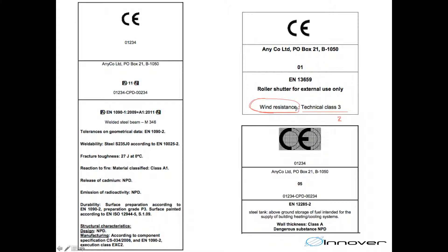The same thing goes for every other product and every other CE mark. For example, if reaction to fire is one of the characteristics declared in the CE marking, we can be sure that how the manufacturer defined reaction to fire is similar to every other manufacturer who has CE marked their structural steel product. Similarly, wall thickness has always been defined and determined the same way across all CE markings. So if one manufacturer says their wall thickness is class A and a competing manufacturer also says class A, we know for sure that the wall thickness in both products is comparable.